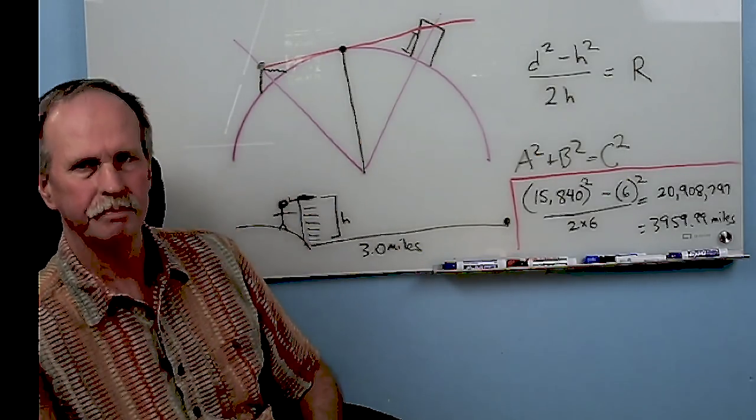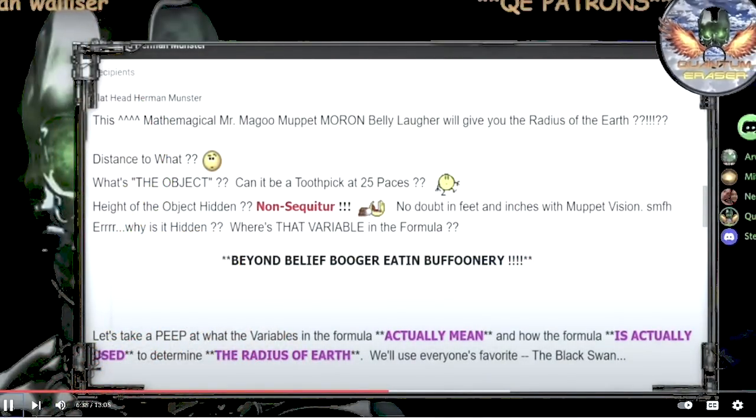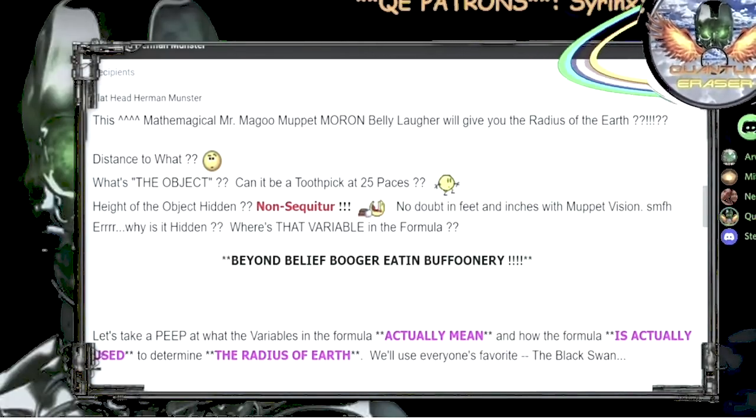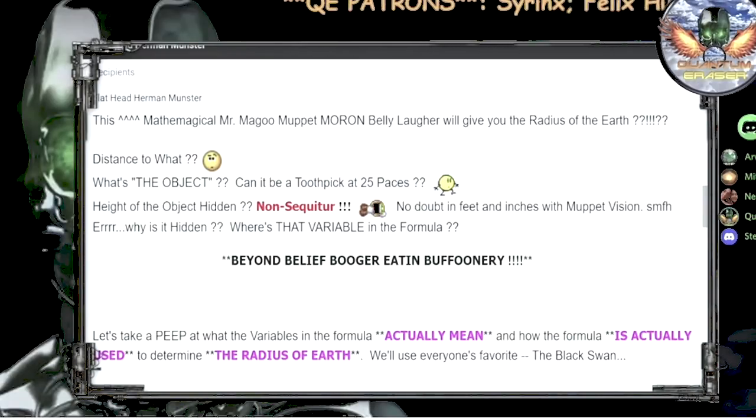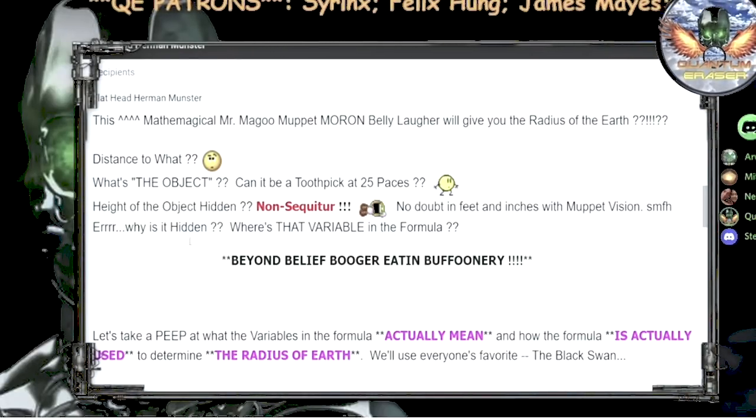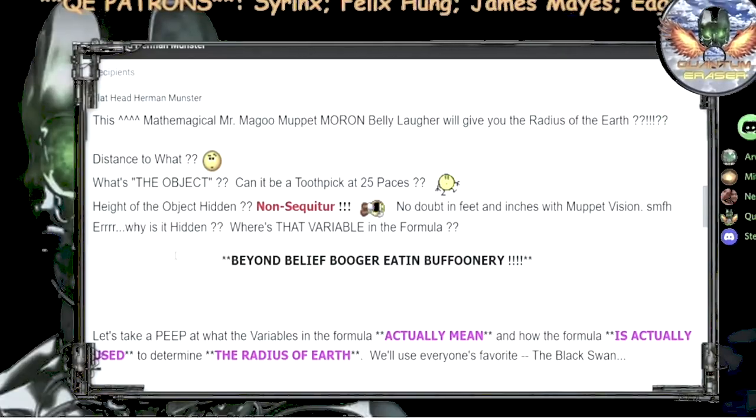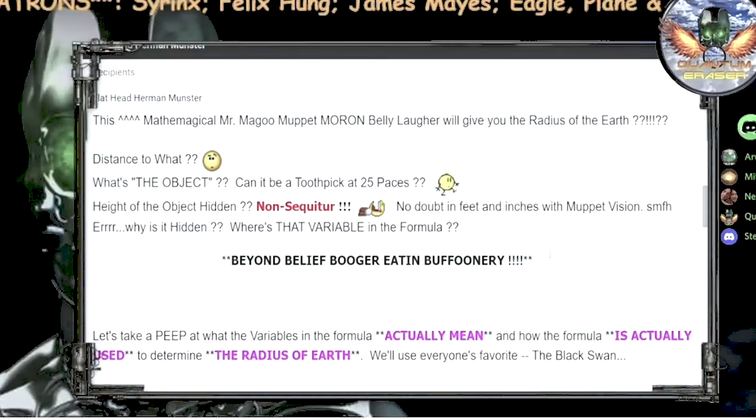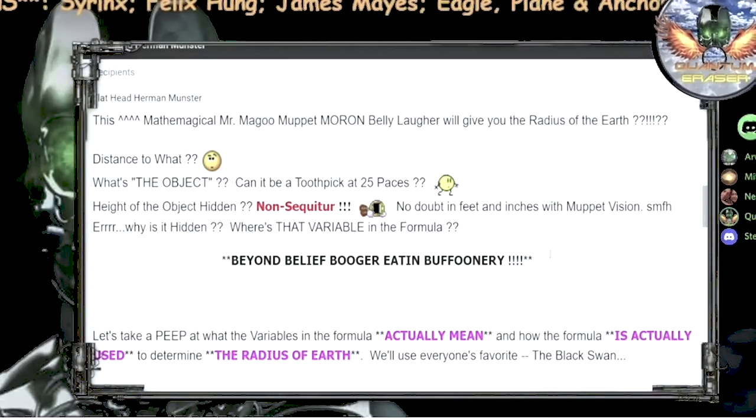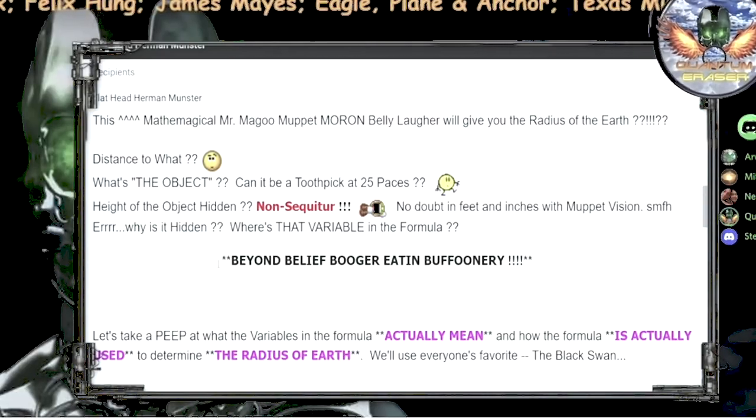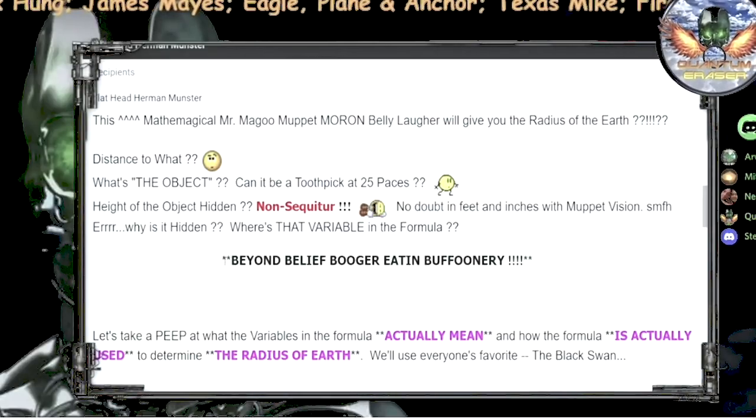You know, flat earthers love to try and take advantage of the effects of refraction, which they know very well. That's why they always put their cameras way down by the water. This was a great way not only to estimate the radius of the Earth, but how much refraction was present by comparing that radius to the known radius of the Earth. But you see how he's trying to strawman me by rephrasing my argument.